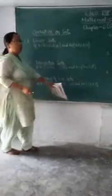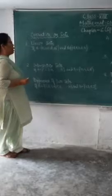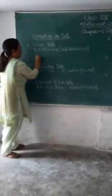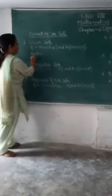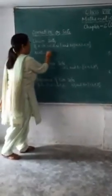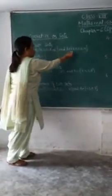The first operation on sets is the union set. What is a union set? If you are given two sets A and B, then the union set is written as A union B.